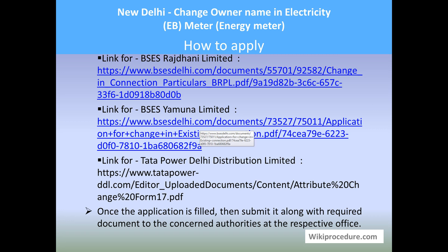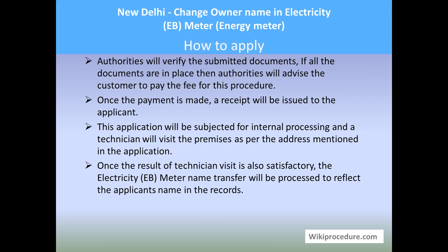An authority will check the submitted details and documents. If everything is in order, you will be asked to pay the fees at the respective counter; collect the receipt for payment made. Once payment is made, the application will be internally processed. A technician will be allotted for physical verification of the premises, checking current meter readings, meter running condition, and other technical details. Based on a satisfactory report from the technician, officials will process the application to make the name change in the electricity EB meter records.